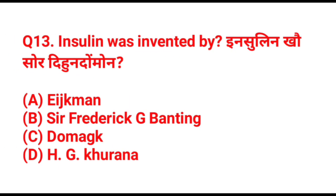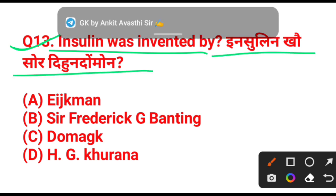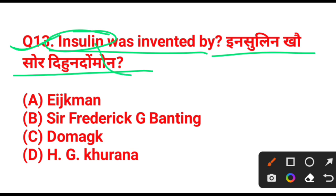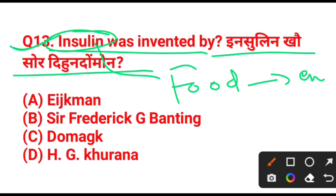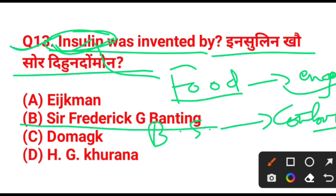Question number 30: insulin was invented by whom? Insulin helps convert energy and controls blood sugar — it controls blood sugar levels. The answer is option B — Frederick G. Banting. Option number B is the right answer.